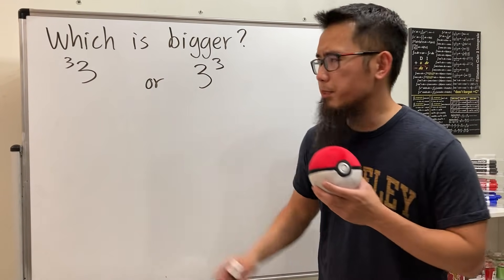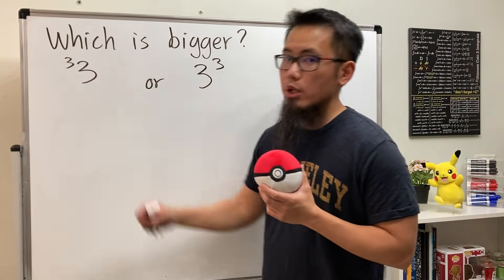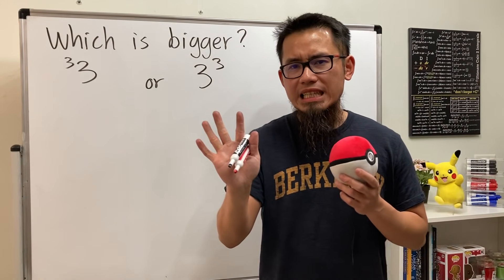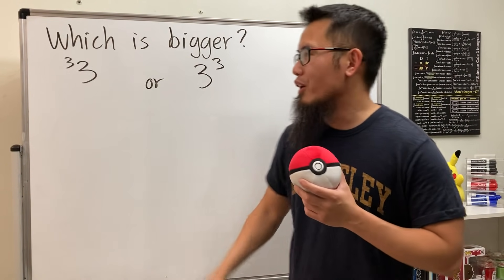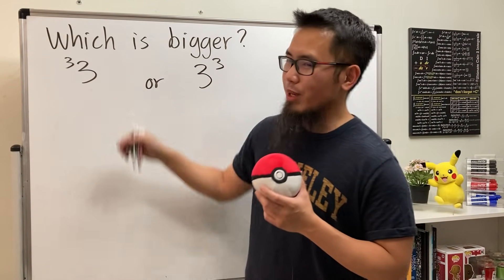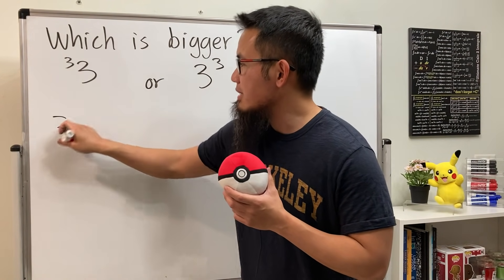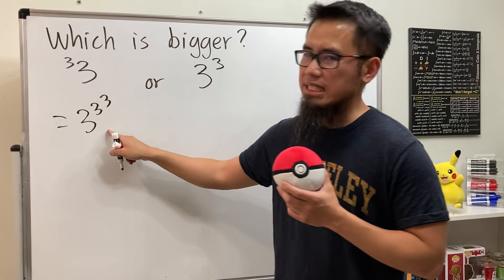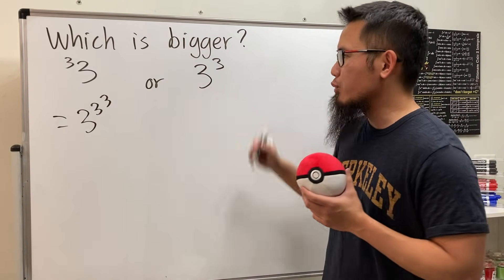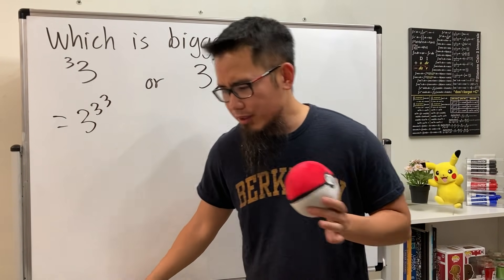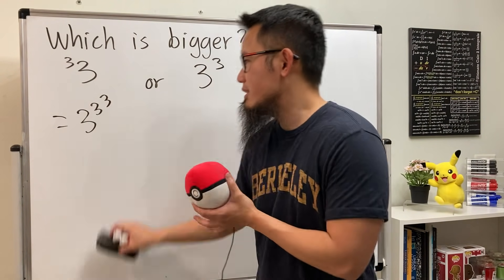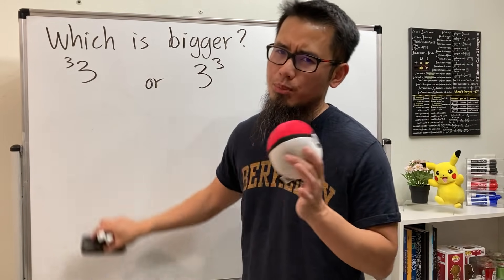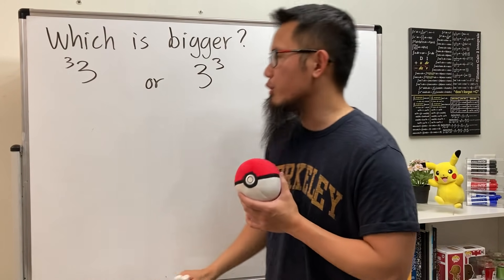Question for you: which number is bigger, three to the power shown here, or three to the power shown here? I'll give you five seconds — five, four, three, two, one. Of course the answer is this right here, because it means three to the three to the three, so this is definitely bigger than that. I know this is too easy, but don't worry, I'm going to fix this to make it more exciting.